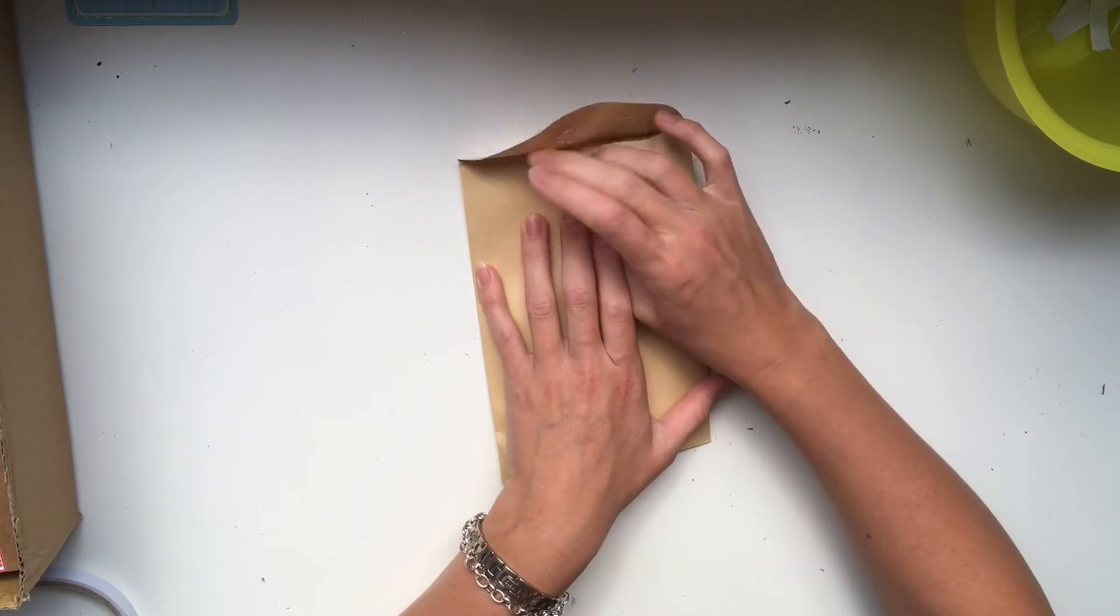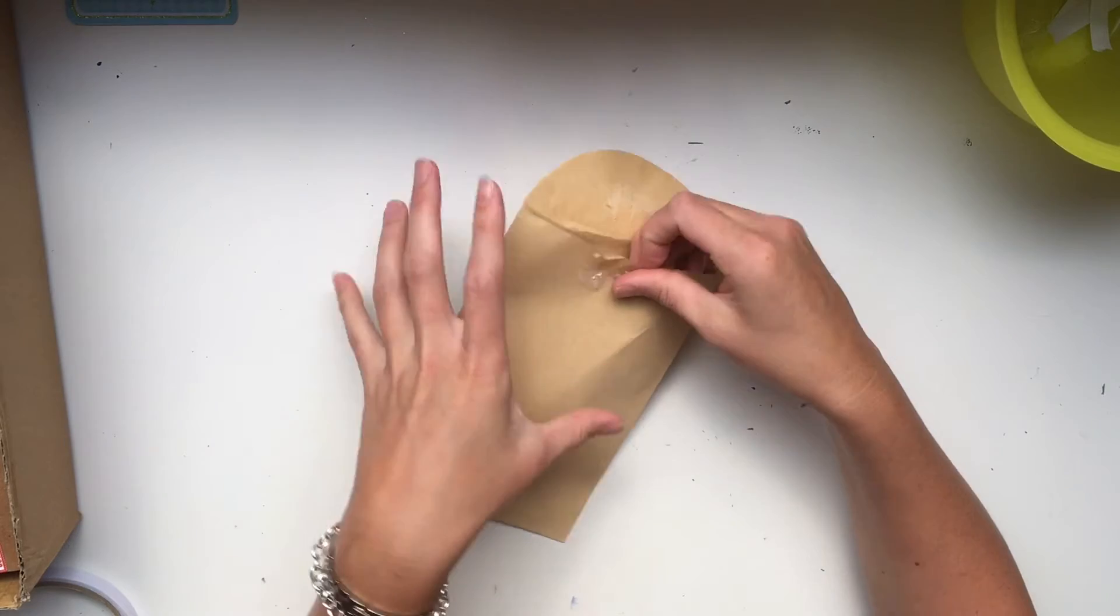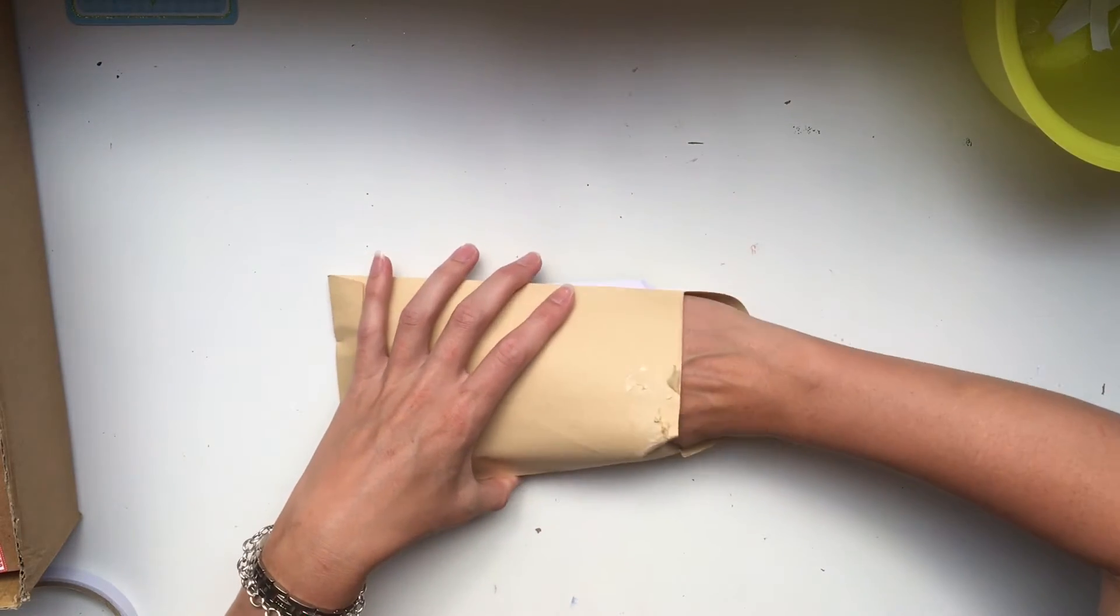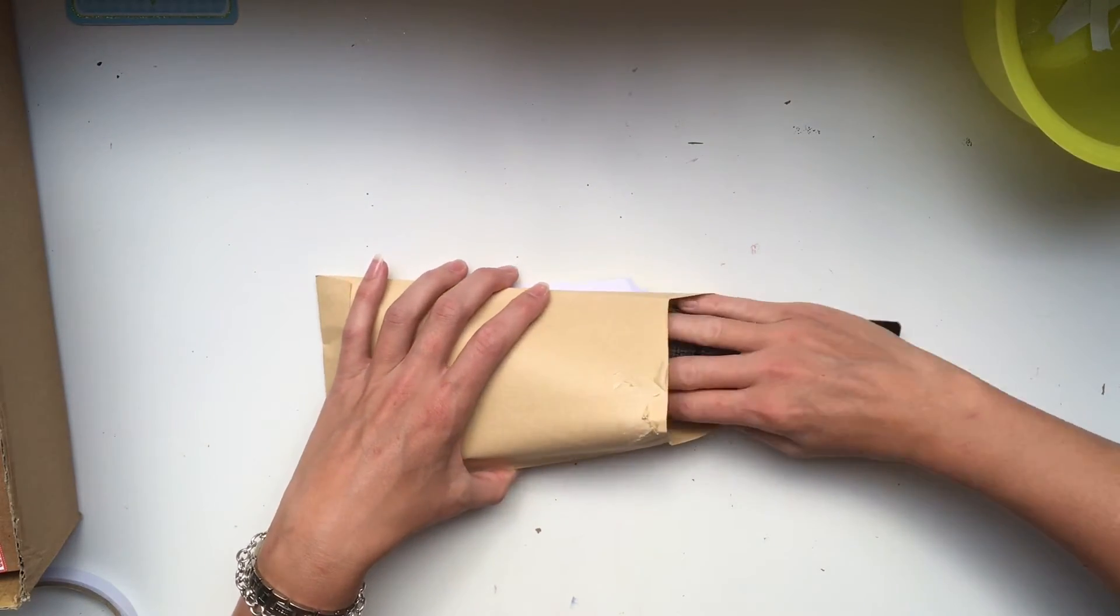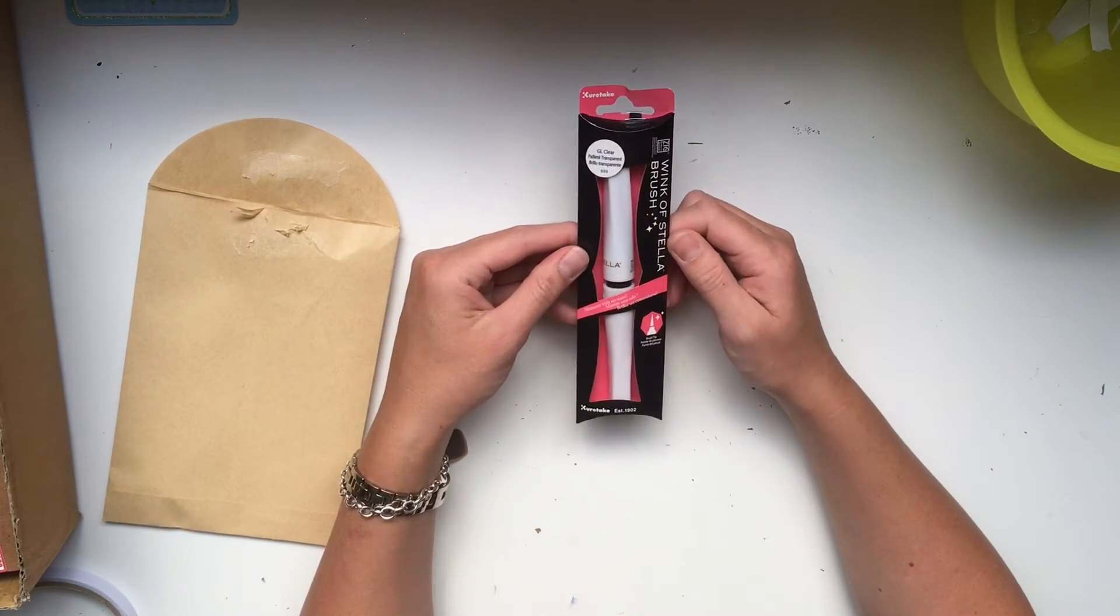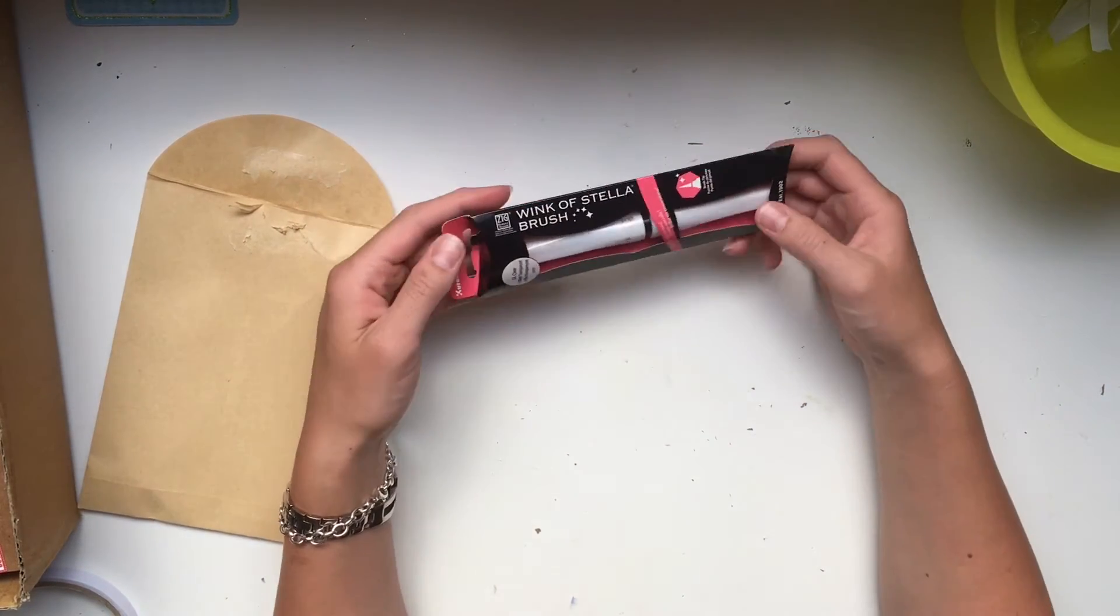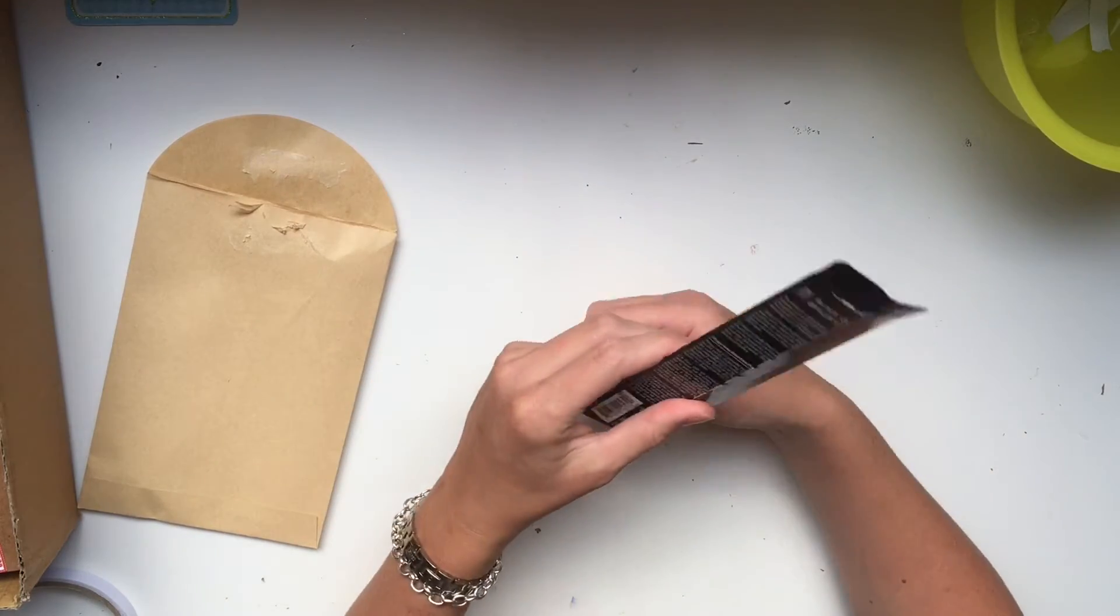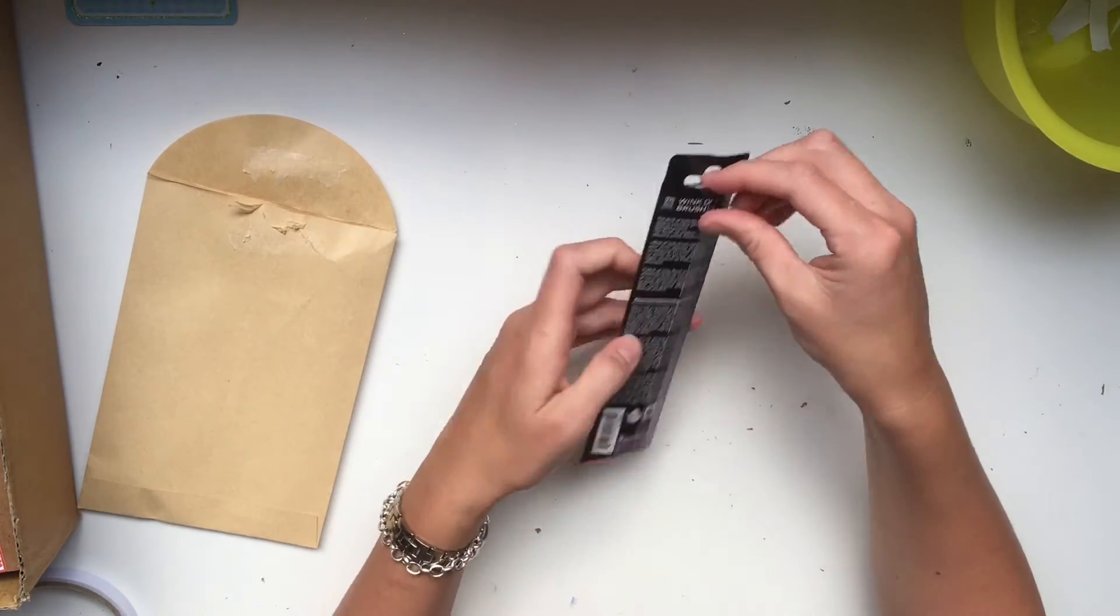Now this should be a purchased present because this is an even day and she does her homemade gifts on odd days and purchase presents on even days. Oh, Katie. Wink of Stella. This was supposed to be my actual Christmas present, not in the advent calendar. Oh, I love Wink of Stella.